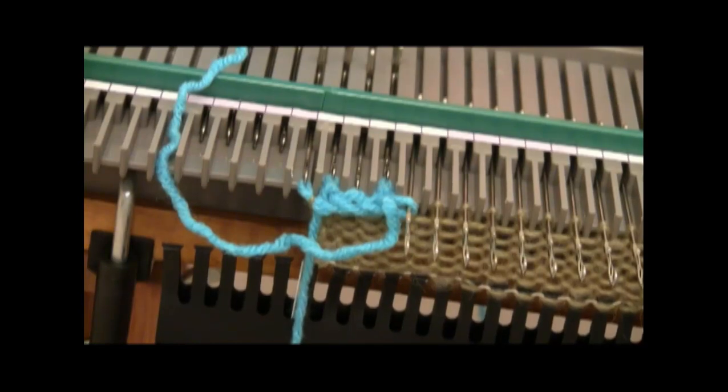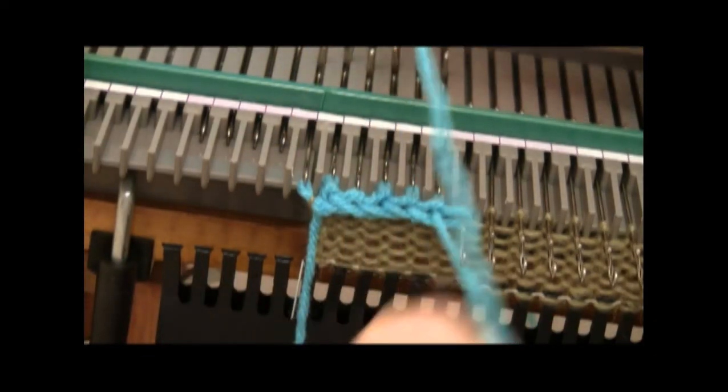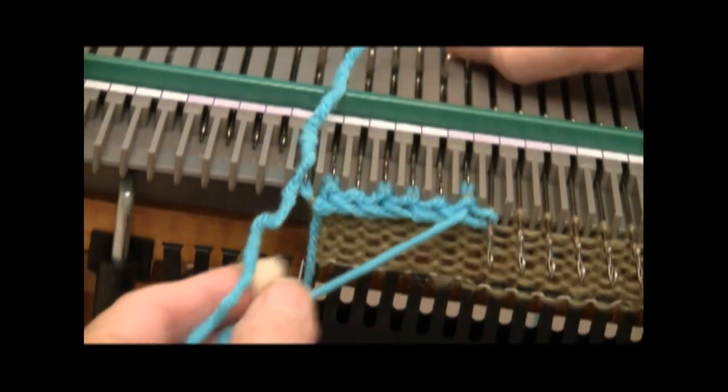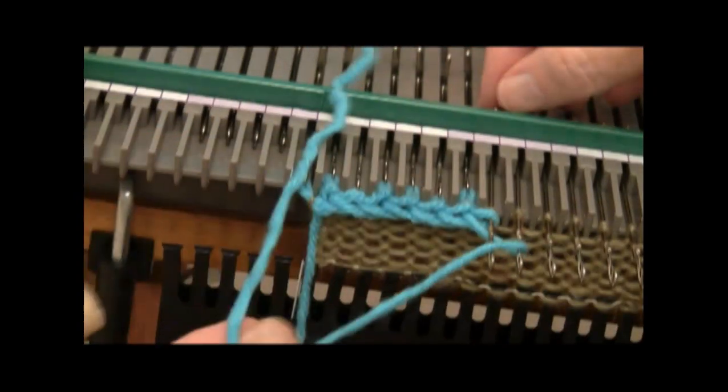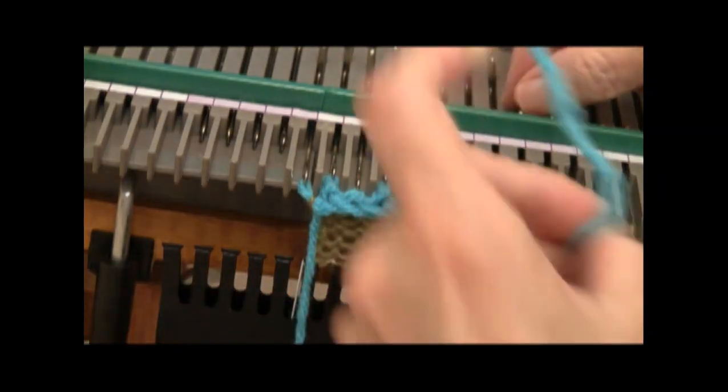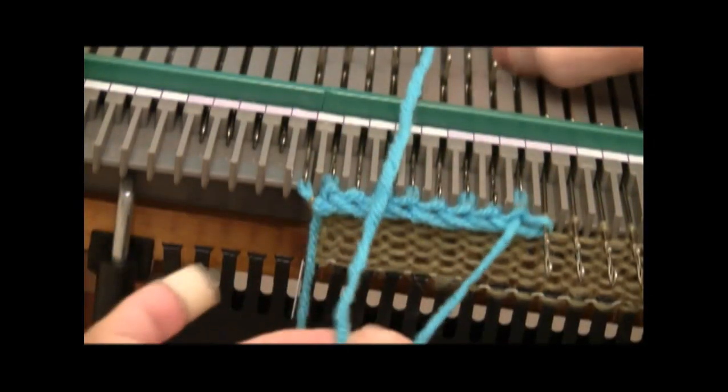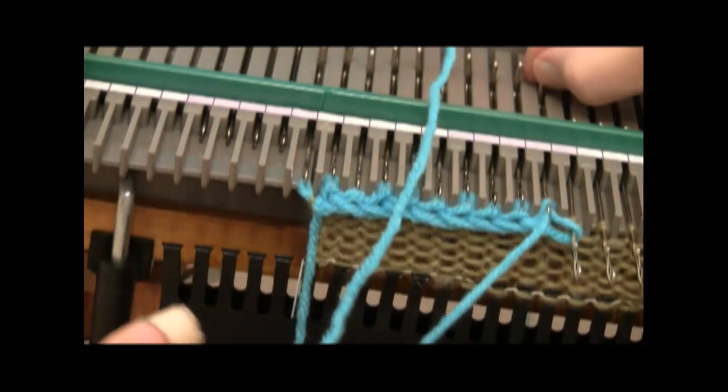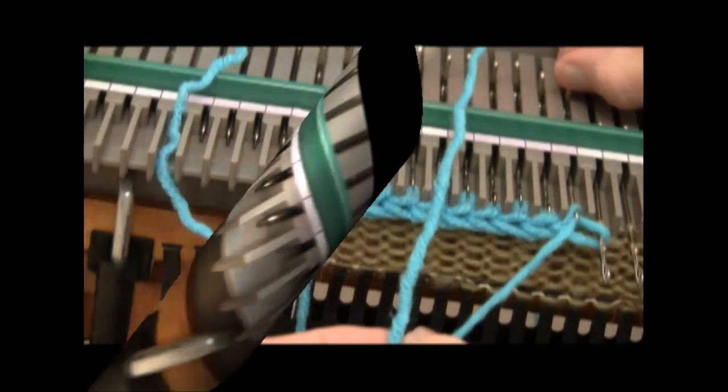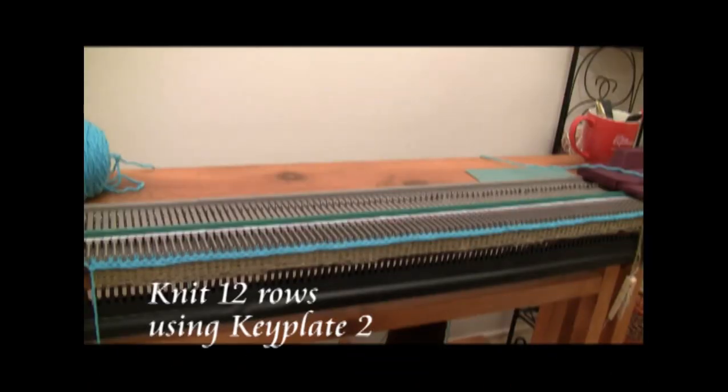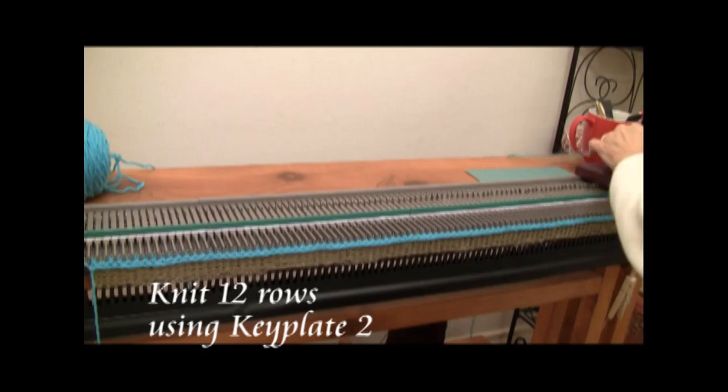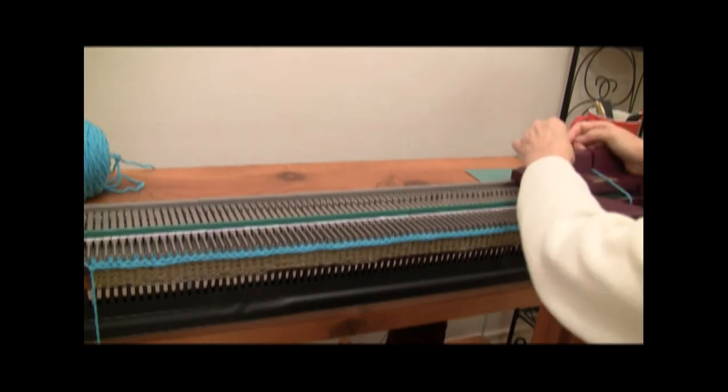And I'll just keep working across in this way. This is a little different edge on the ribbing. You can do one of the other edges, but I wanted to take advantage of a new video to show a different edge. Now, using Key Plate II, I'm going to knit 12 rows.